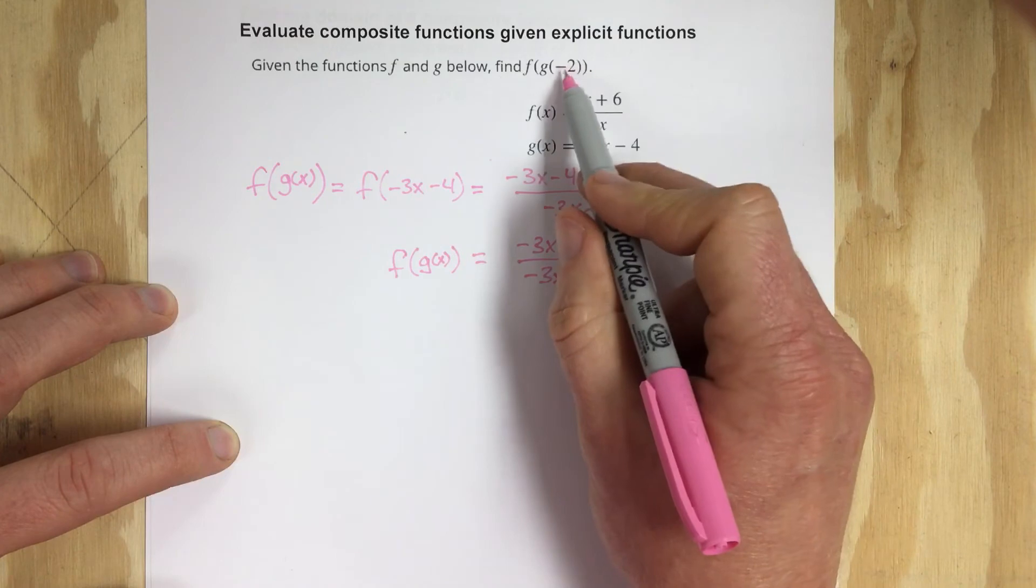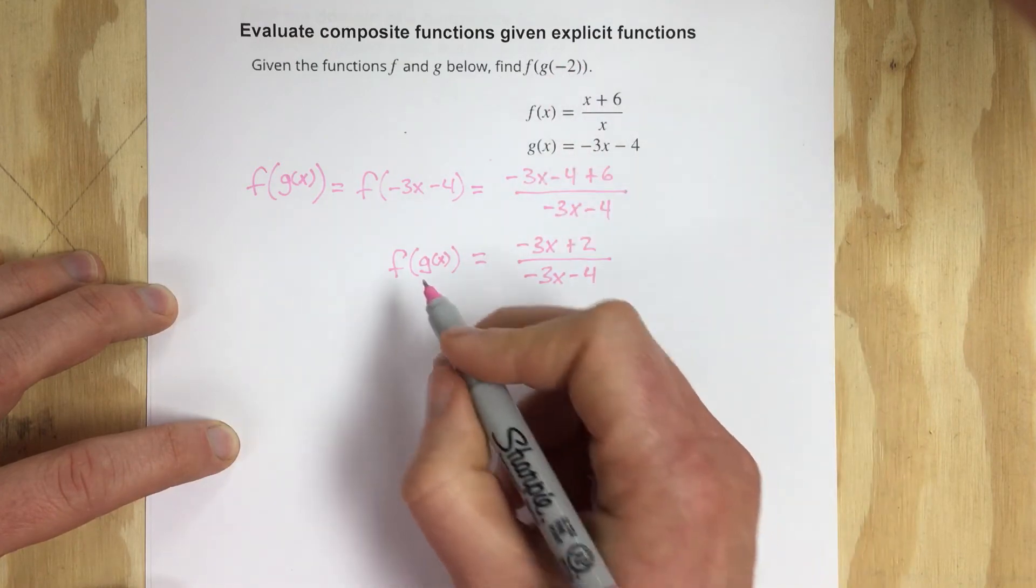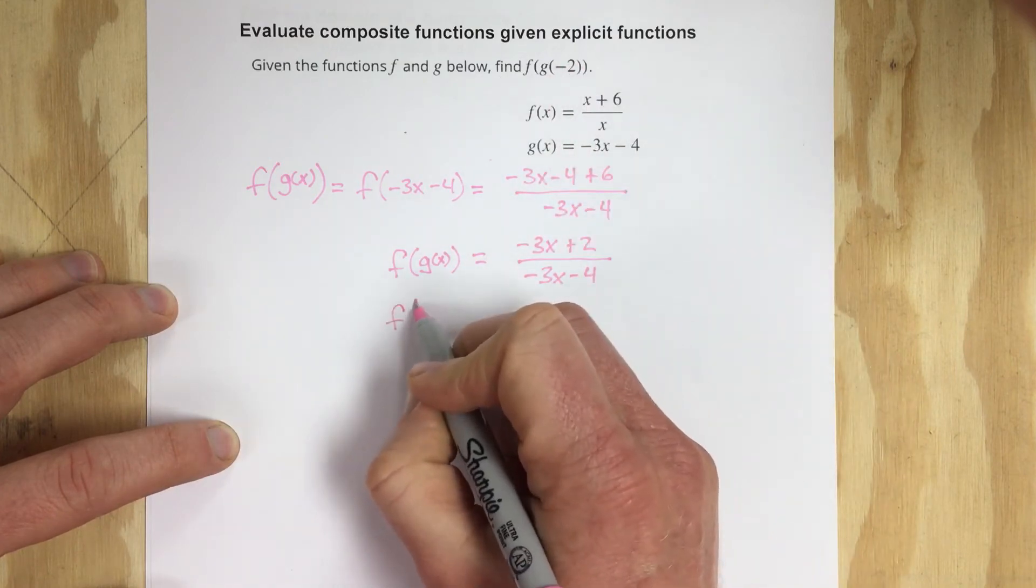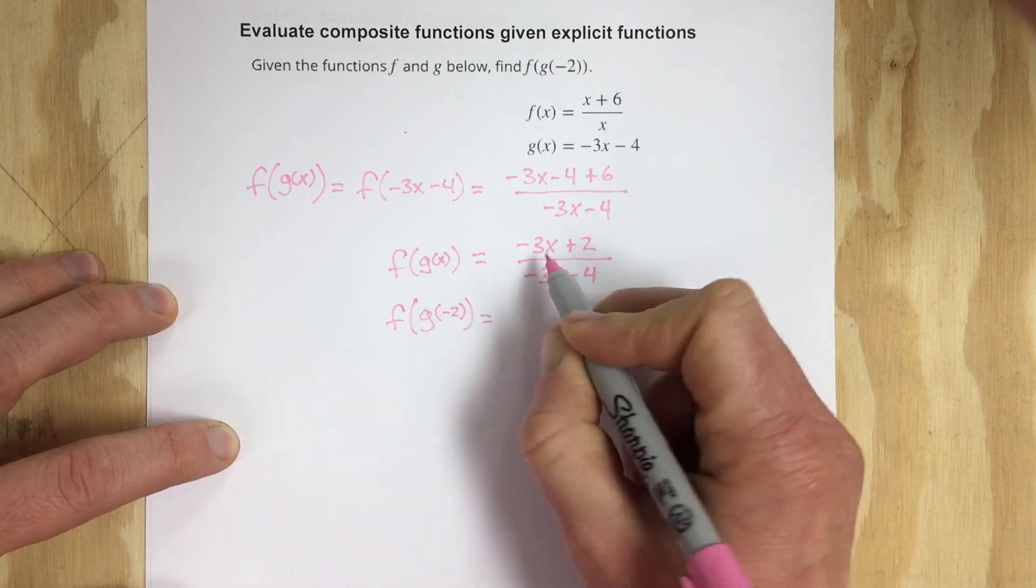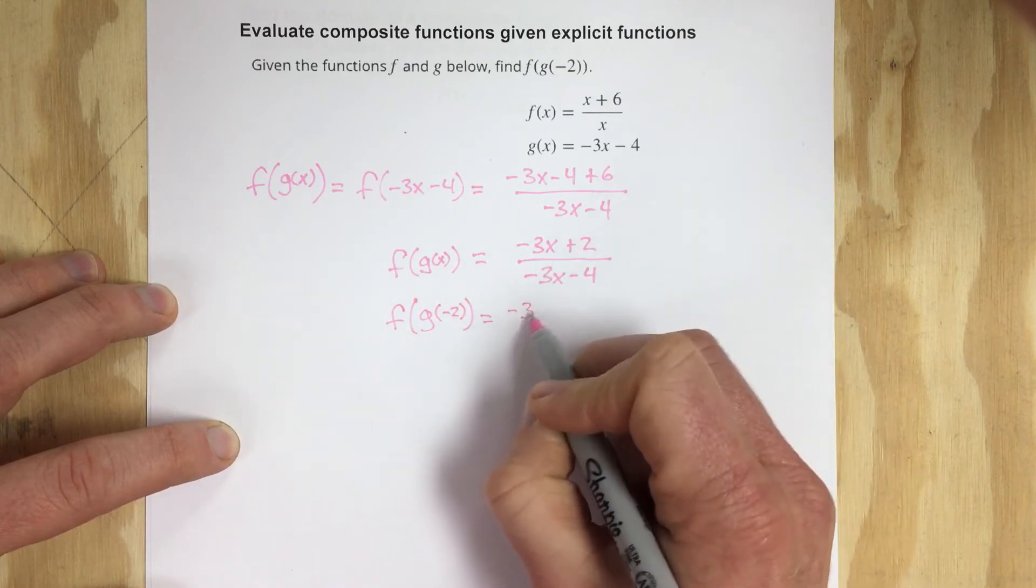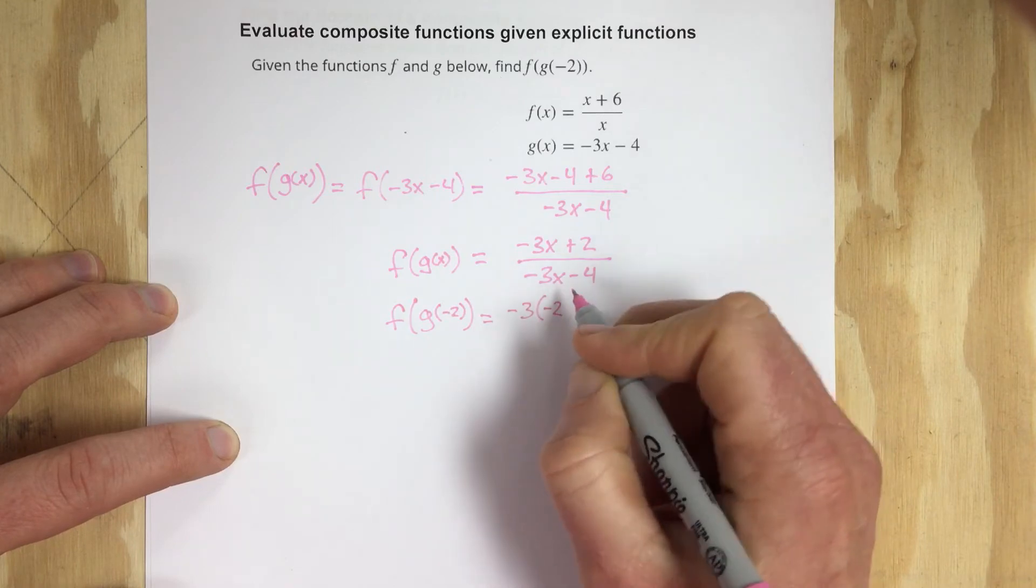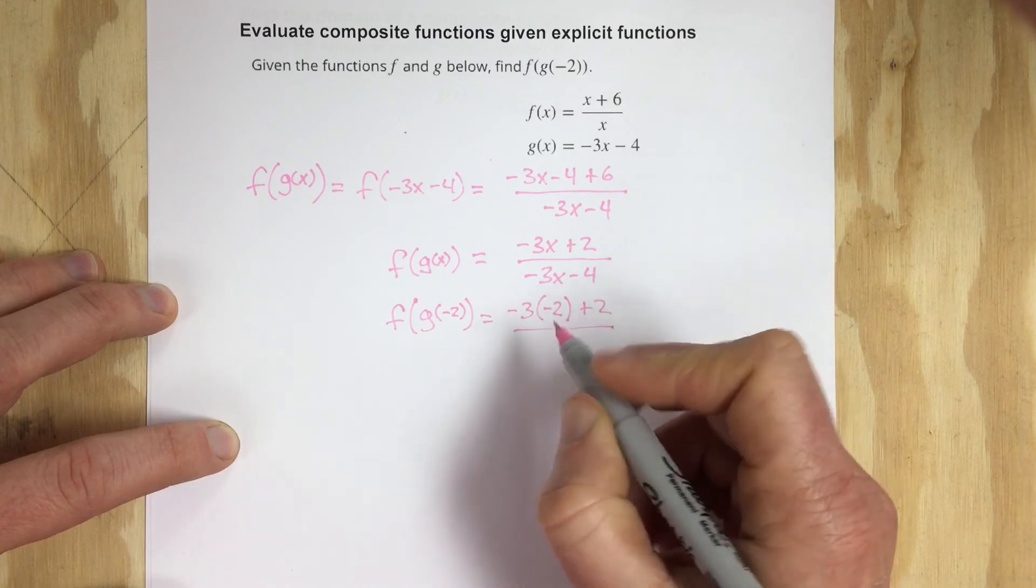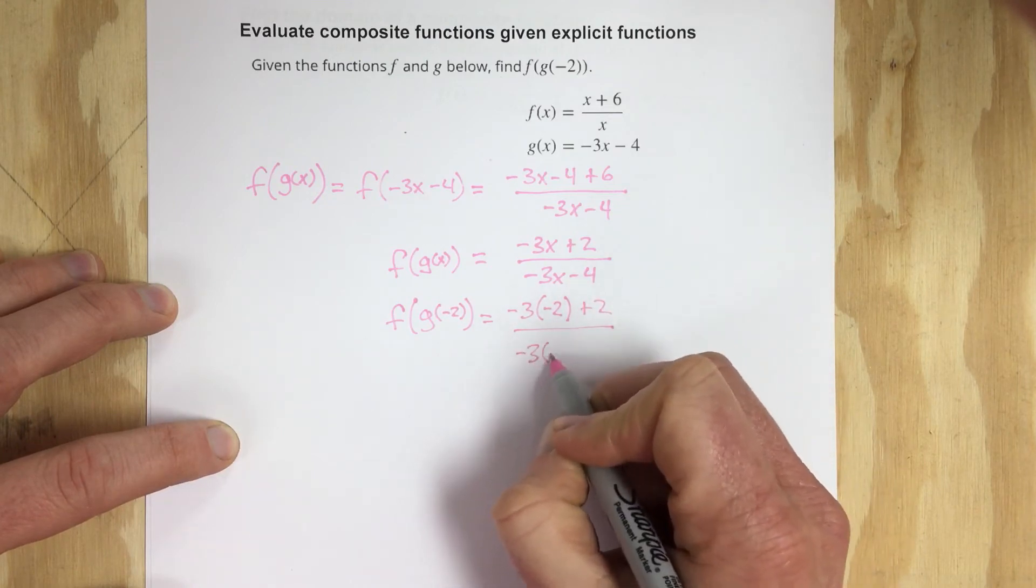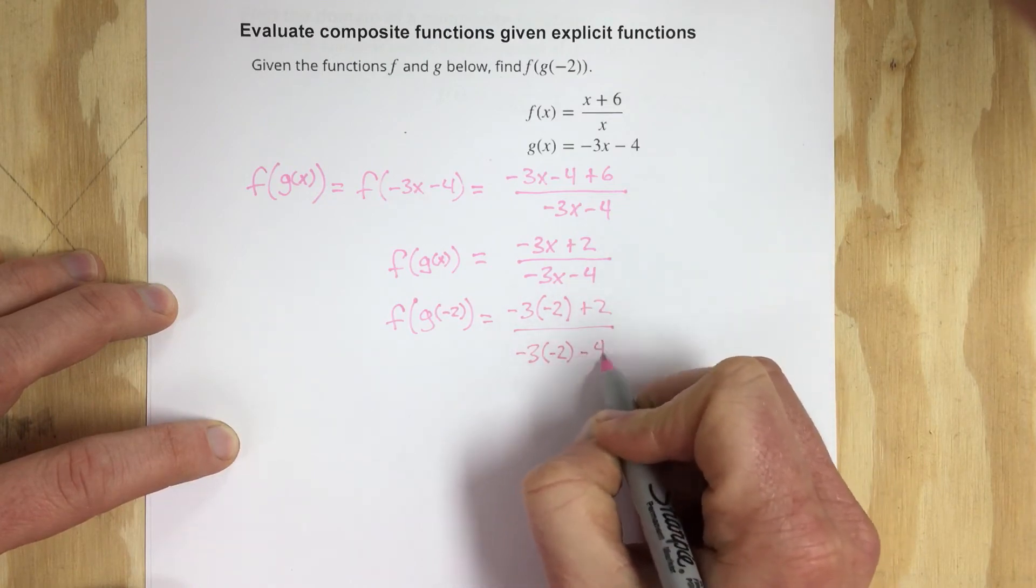They want us to find f of g at the spot x equals negative 2. So we're going to now plug in negative 2 into this function so that's negative 3 times negative 2 plus 2 divided by negative 3 times negative 2 minus 4.